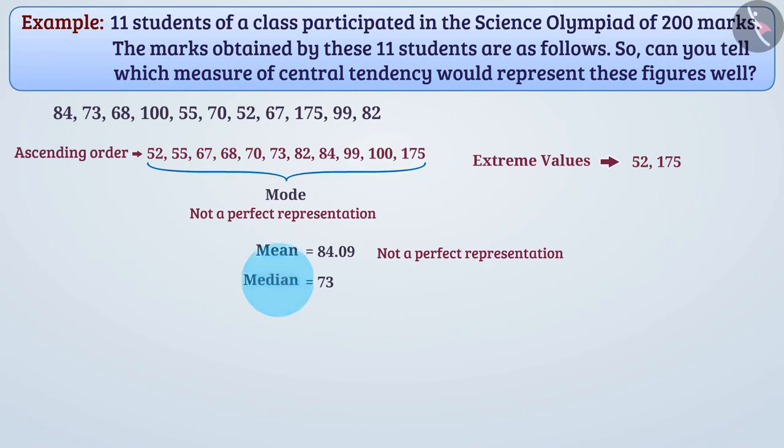Now, if we talk about the median, the value of median is 73. Here, the number 73 is more effectively representing the marks obtained by the students, and the extreme value of 175 is not having much effect. Hence, median 73 is the best representation of this group.